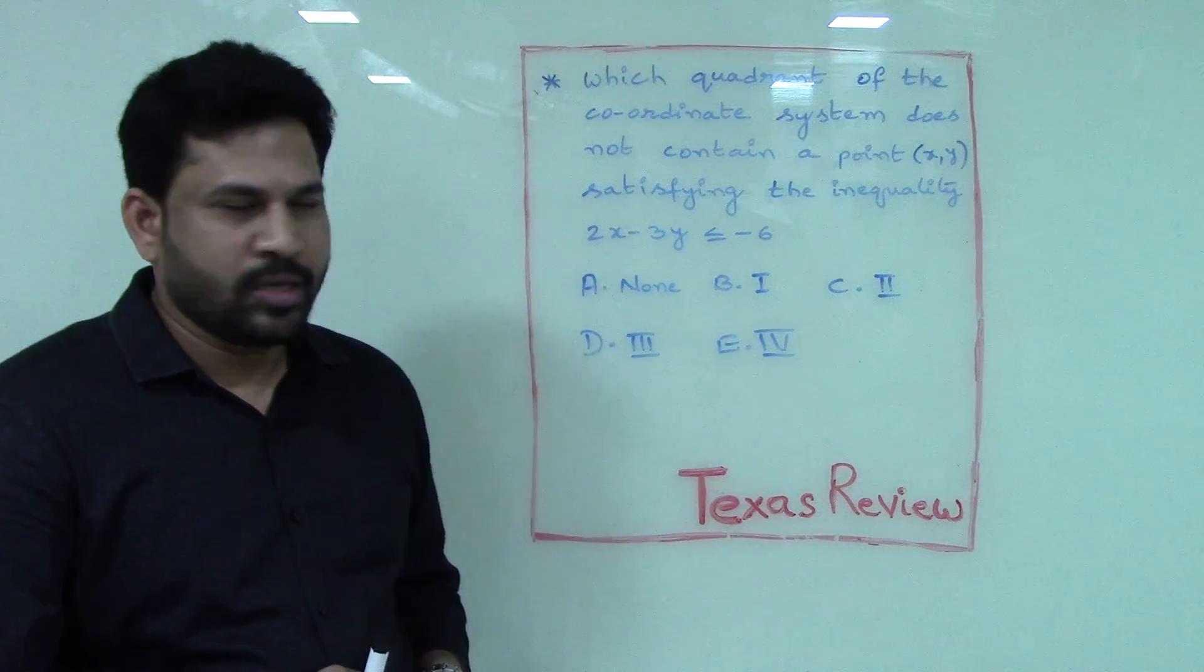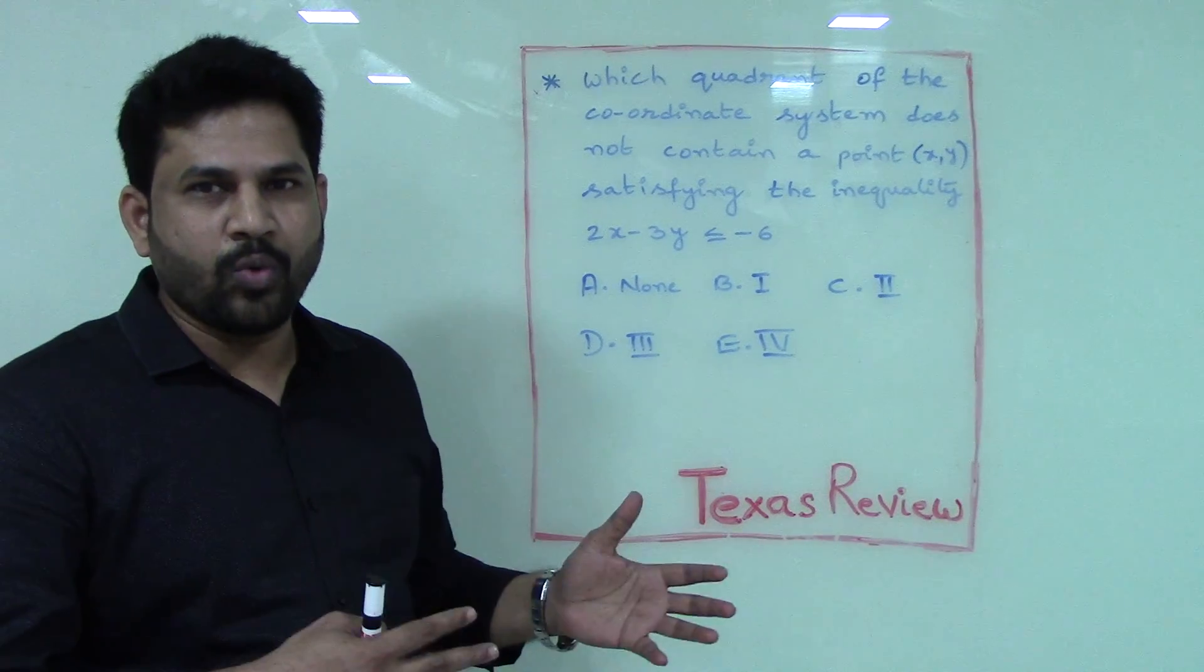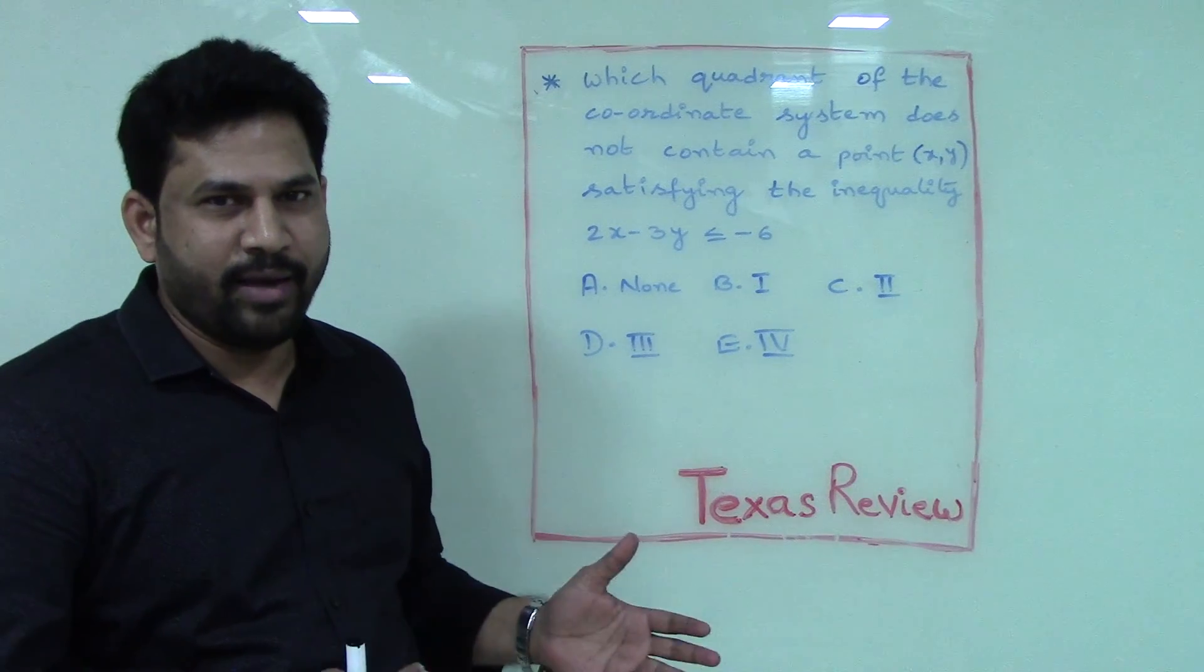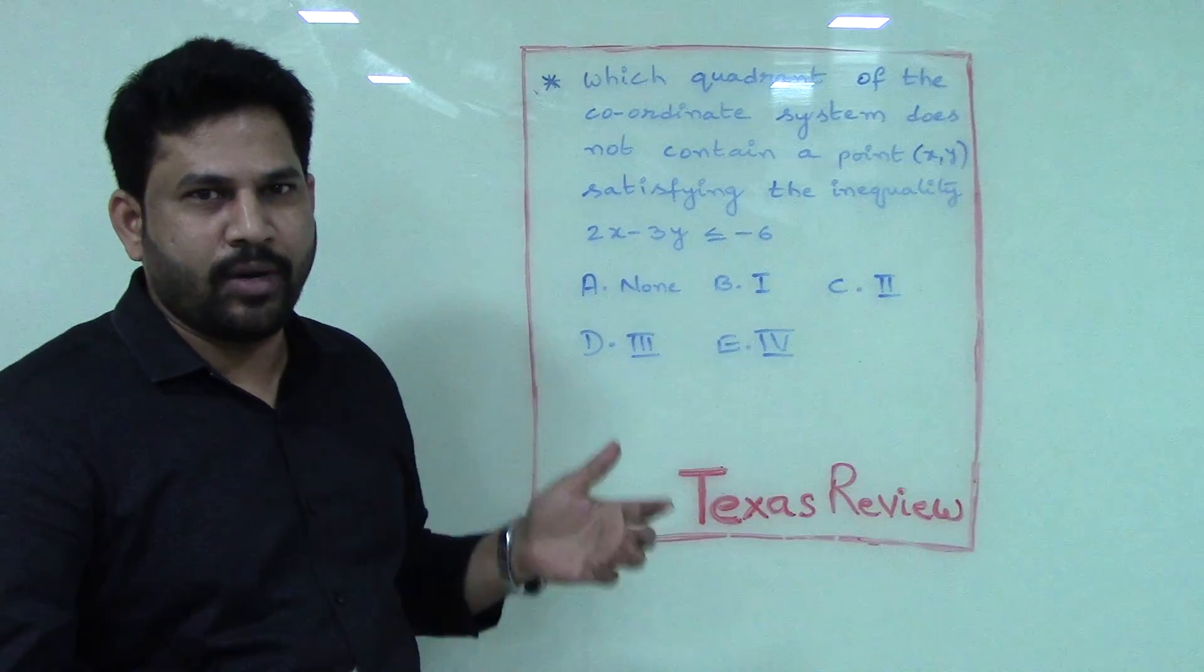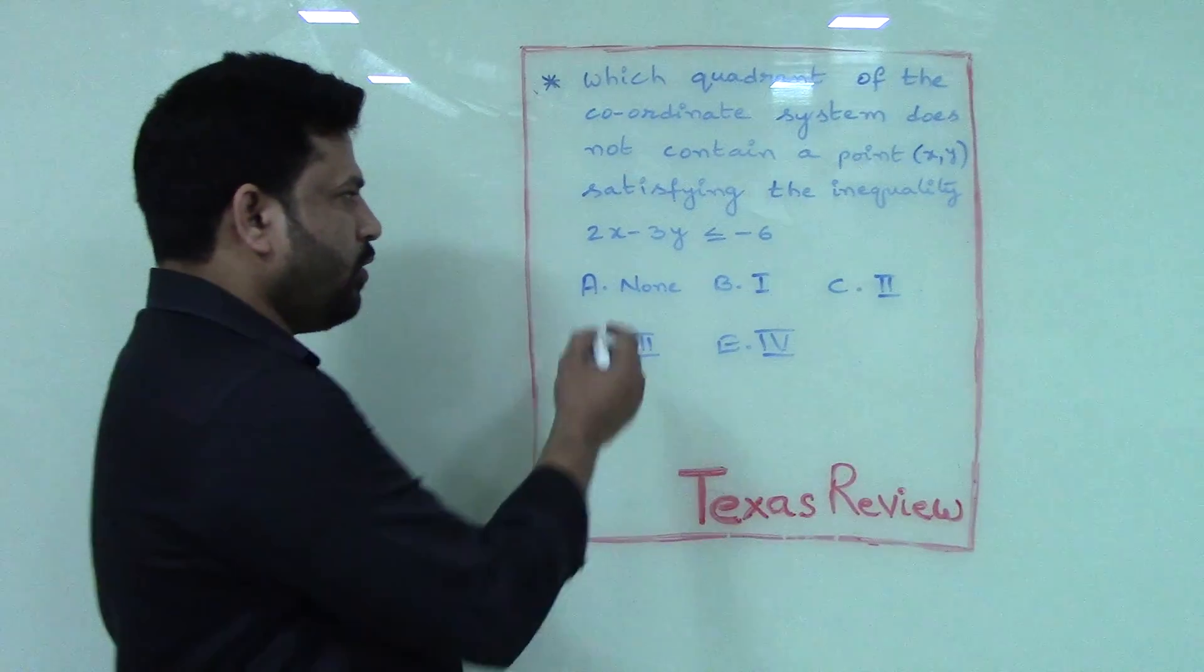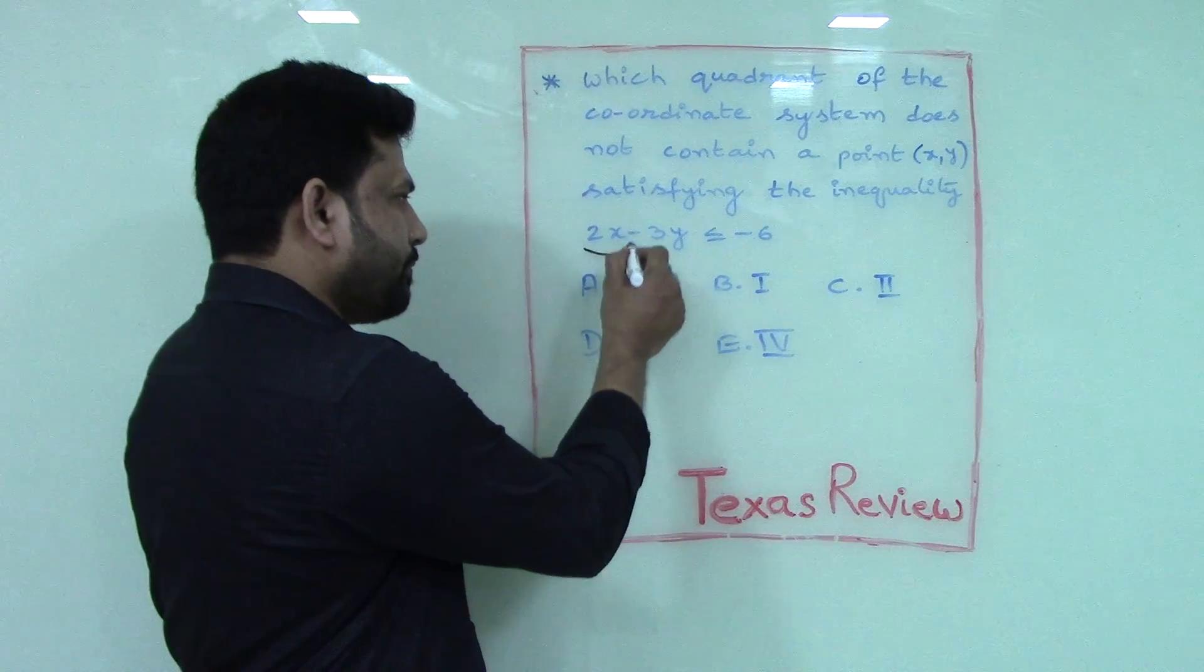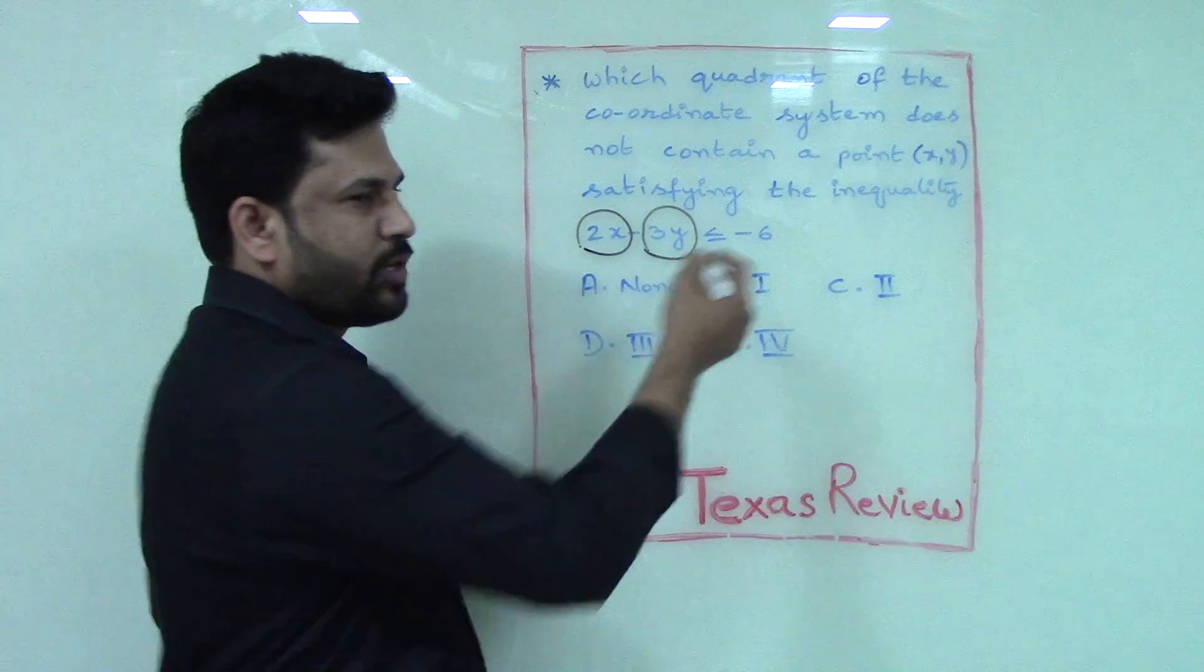The problem is, which quadrant does not have a point satisfying this inequality? Let us try to understand the inequality here. Look at this inequality: 2x minus 3y less than or equal to minus 6.